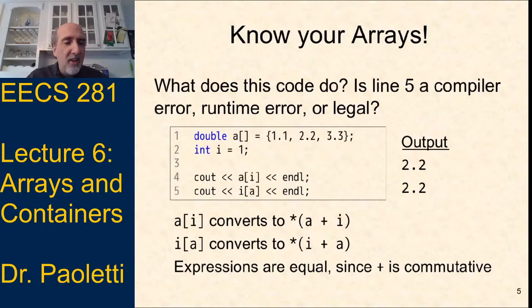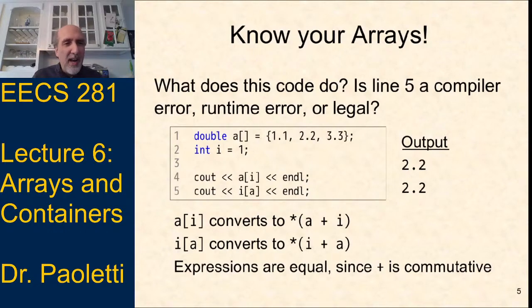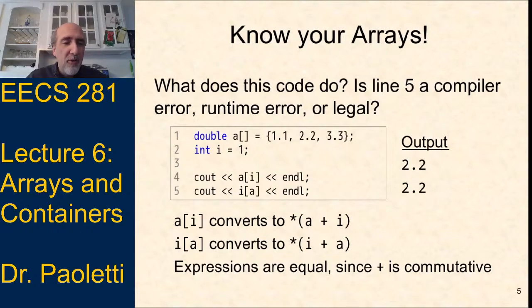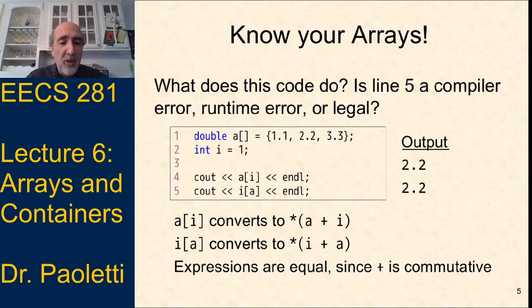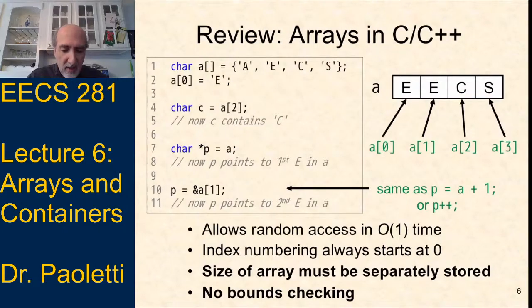The reason is that a[i] and i[a] — the compiler converts both to pointer notation. That's what we mean when we say arrays are pointers and pointers are arrays. i[a] converts to dereference(i + a), and an integer plus a pointer is the same as a pointer plus an integer — plus is commutative even when adding pointers and integers. I didn't expect you to know this for the exam, but it illustrates how things that look like arrays are really treated like pointers.